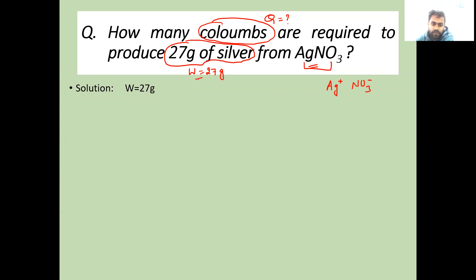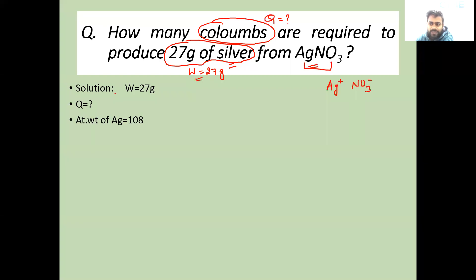The weight is 27 grams. So Q equals what? The atomic weight of silver, Ag, is 108. The valency of Ag is 1.